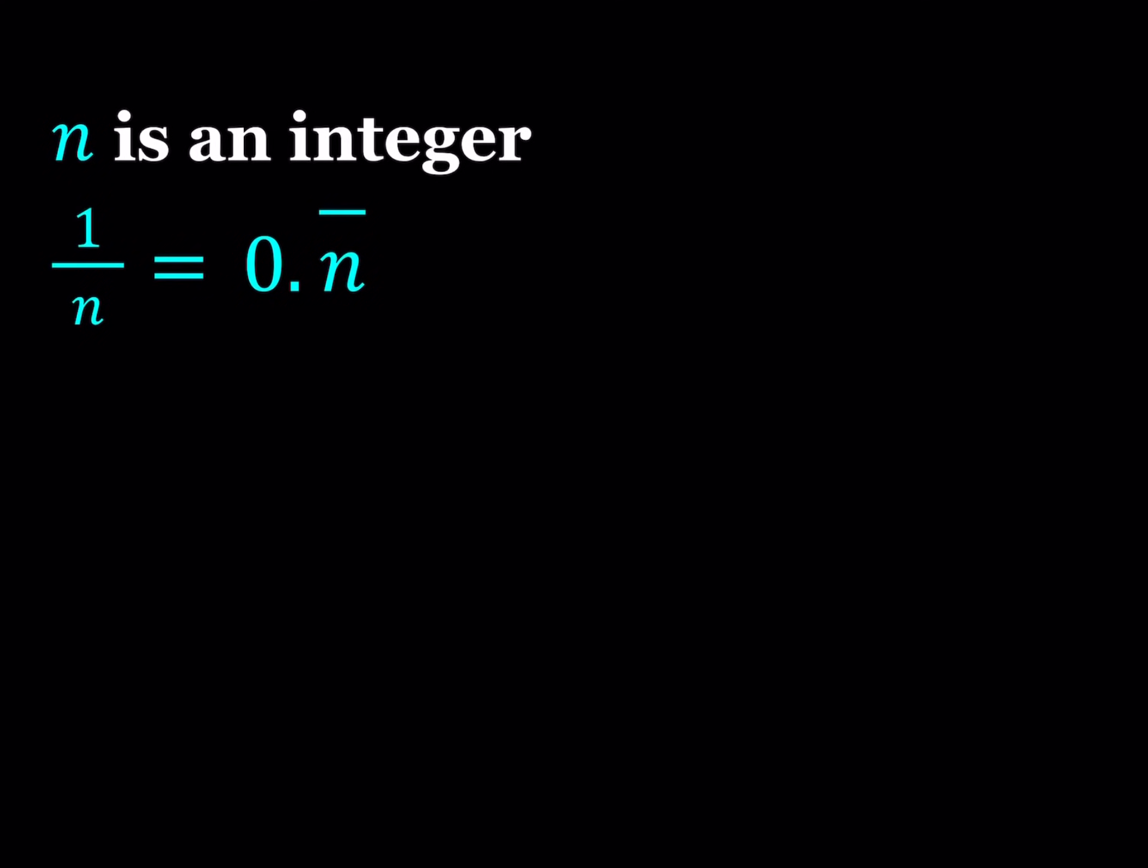Hello everyone. In this video we're going to be solving an interesting equation. n is an integer and we have 1 over n on the left hand side and on the right hand side we do have a repeating decimal.